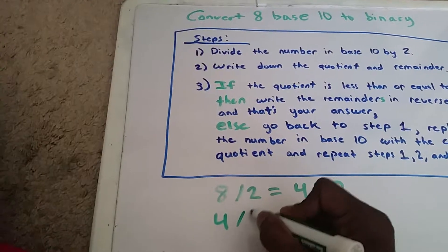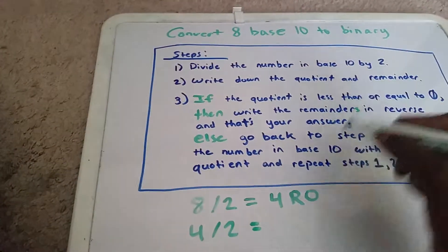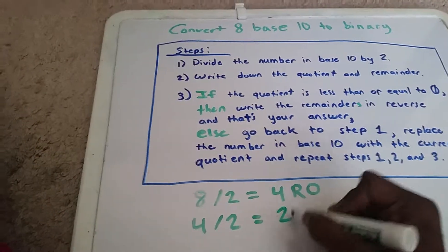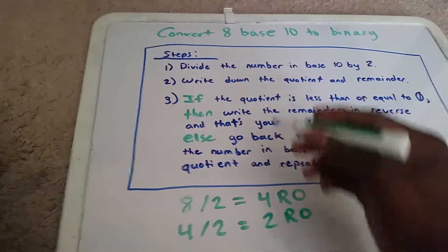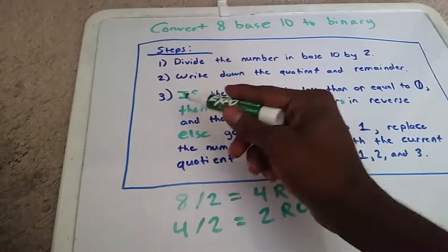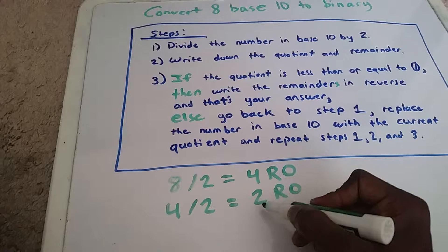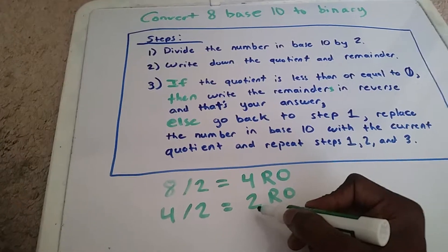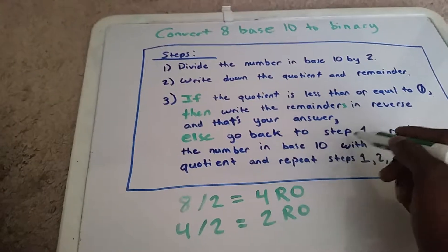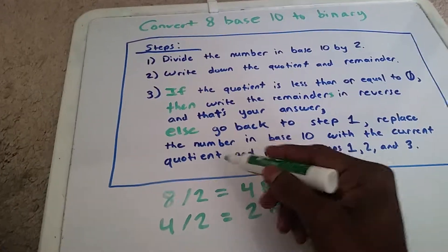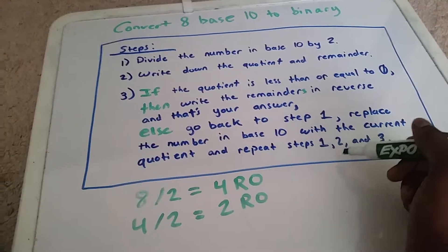We now have 4 divided by 2. Going back to step 2, we write down the quotient and the remainder. This gives us 2 with a remainder of 0. We go to step 3 and check if the quotient is less than or equal to 0 — our quotient is 2, so it's greater than 0. We go back to step 1, replace the number in base 10 with the current quotient, and repeat steps 1, 2, and 3.